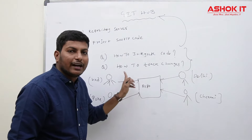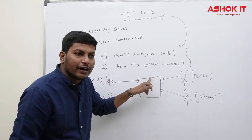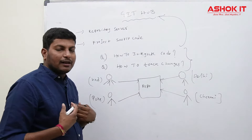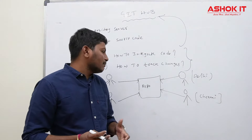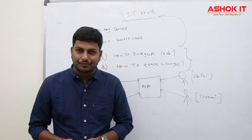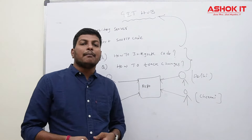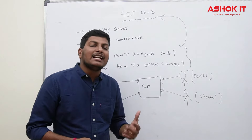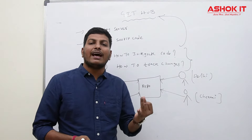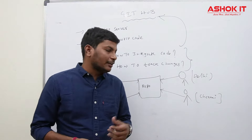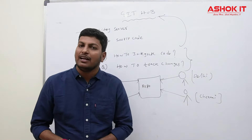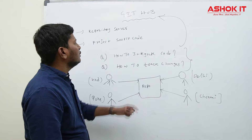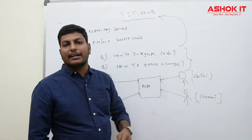GitHub is a repository server used to integrate project source code at one place, and it provides tracking — which developer modified the code, when they modified it, why it was modified, what was modified. Complete monitored access will be available. For example, if I'm a developer and my code is missing from the repository, I can easily track who, when, why, and what.